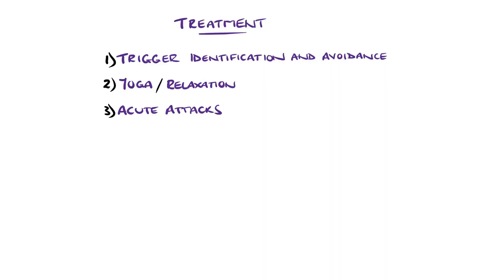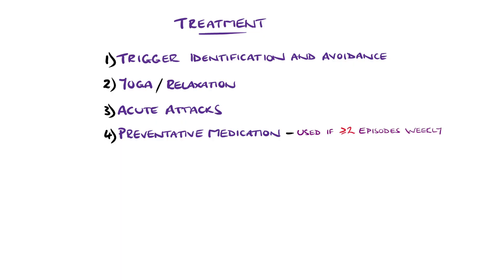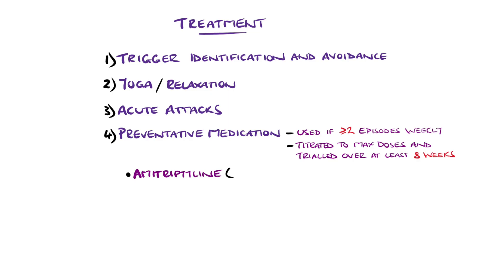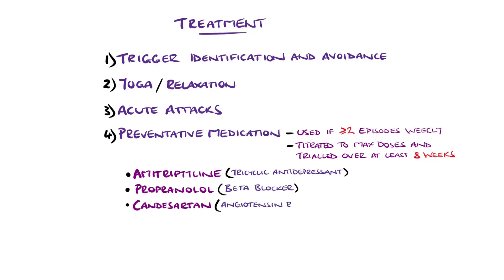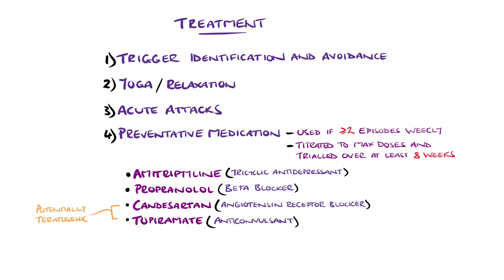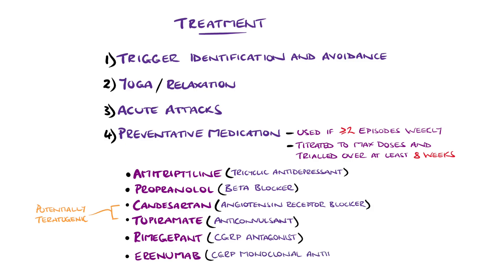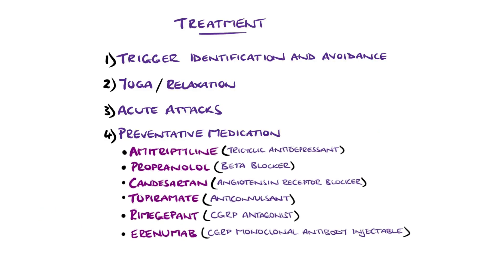Preventative treatment is explored in those with frequent attacks, typically two or more per week. These medications are titrated to maximum tolerated doses and maintained for at least eight weeks to fully assess the response. Examples include the tricyclic antidepressant amitriptyline, beta blockers such as propranolol, the angiotensin receptor blocker candesartan, and the anticonvulsant topiramate. However, topiramate is teratogenic and generally avoided in females of childbearing age, as is candesartan. Gepants may also be used as a preventative agent, such as rimegepant, and there are monoclonal antibodies targeting calcitonin gene-related peptide as an injectable form, such as erenumab. The CGRP antagonists are actually now recommended as the first-line preventative pharmacological therapy by the American Headache Society.